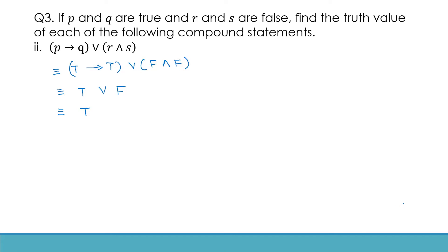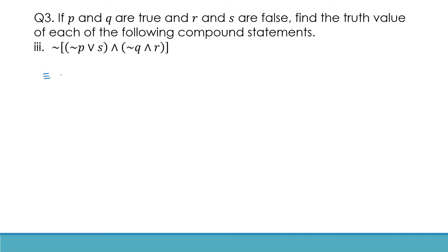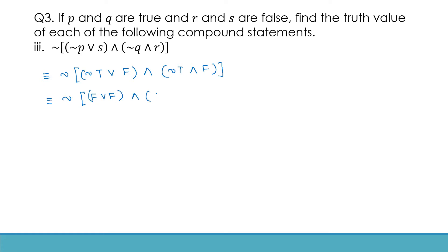Let's do the next one. We get: not of bracket: not true or false, and not true and false. Applying the negations inside: false or false, and false and false. False or false is false; false and false is false. So we have false and false, which is false. After taking the outer negation, not false is true. Therefore this statement is a true statement.